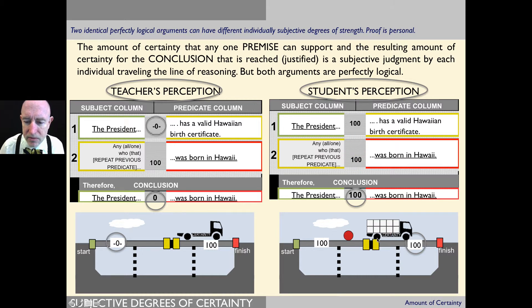So as the student's truck of certainty travels along the line of reasoning, it never has to dump any of the amounts of certainty because the probative load strength of each of the premises can handle 100% of the weight.